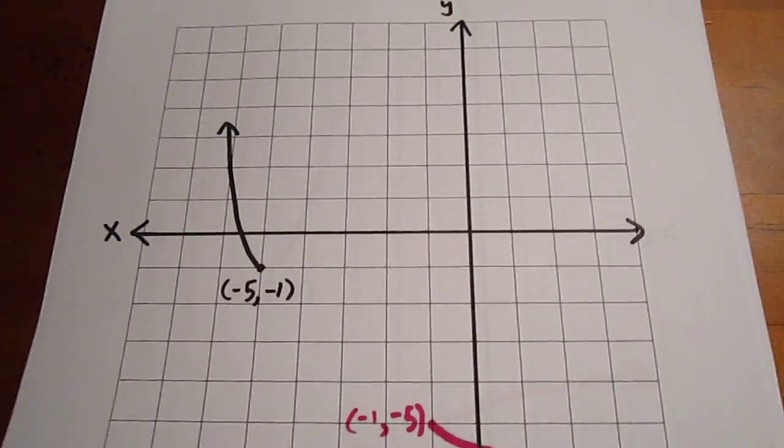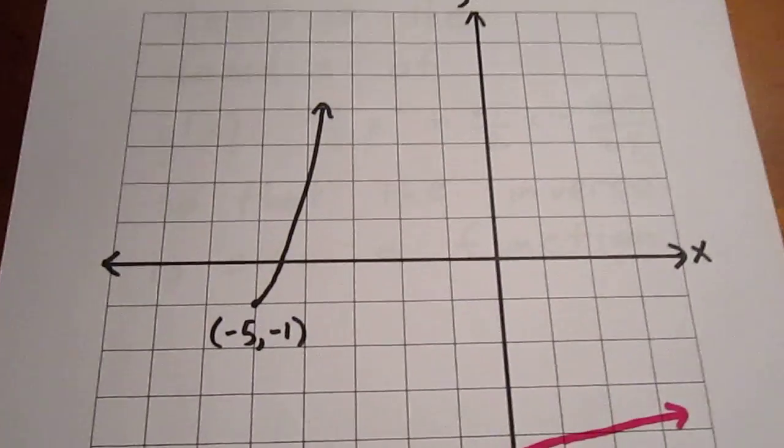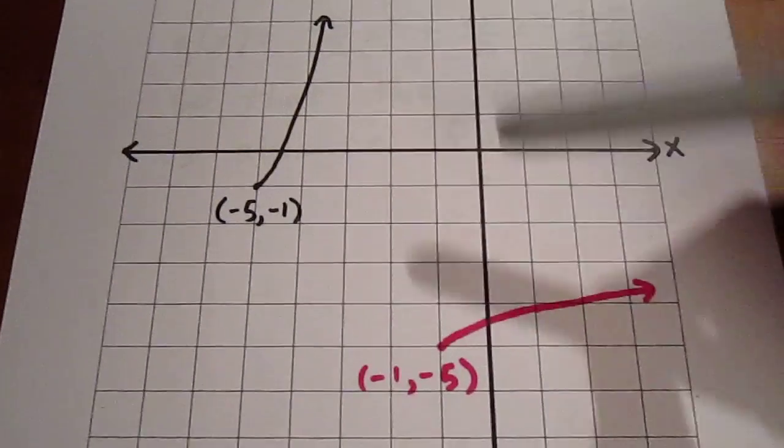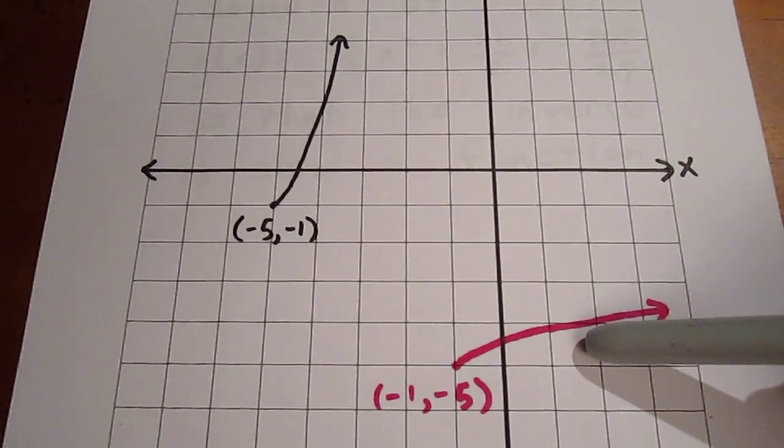Or, if we chose to restrict the domain such that x ≥ -5, we would get this as our inverse, and it would be a function.